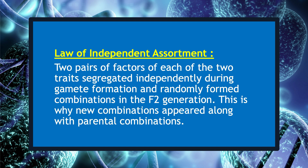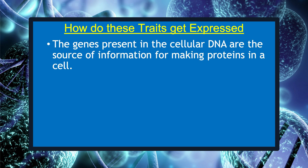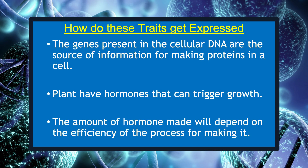This is why new combinations appeared along with parental combinations. How does the mechanism of heredity work? Cellular DNA is the information source for making proteins in the cell. A section of DNA that provides information for one protein is called the gene for that protein. Proteins control the characteristics we are discussing. For example, tall plants have hormones that can trigger growth, and plant height depends on the amount of a particular plant hormone, which in turn depends on the efficiency of the process for making it.